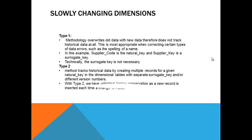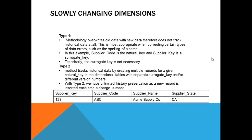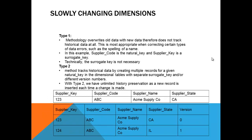Let us see an example. Supplier key, supplier code ABC, supplier name ACME, and the state is California. If you are maintaining it as a type 1 dimension and the supplier moves from California to Illinois, only that one entry is updated — California becomes Illinois. But in a type 2 dimension, a new row is added. The supplier key changes to a surrogate key (e.g., 123 and 124), the supplier code remains ABC, the supplier name stays the same, but the supplier state changes from CA to Illinois, and a version number tracks the change from 0 to 1.